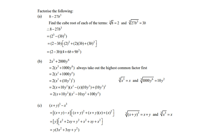For 2x³ + 2000y⁶: 2 and 2000 are not cubes, but taking out 2 as a common factor gives 2(x³ + 1000y⁶). Now x³ is a cube, 1000 is a cube, and y⁶ is a cube. So the answer is 2(x + 10y²)(x² - 10xy² + 100y⁴), where it's a sum of two cubes so the middle term is negative, and x times 10y² gives 10xy².